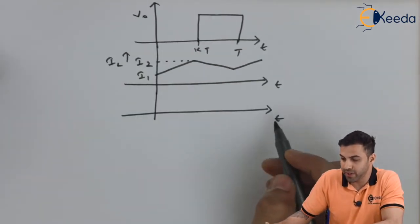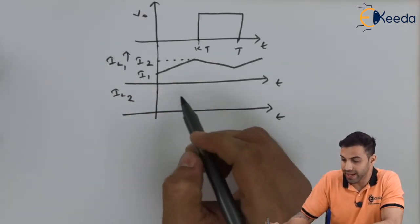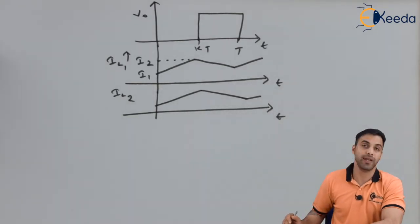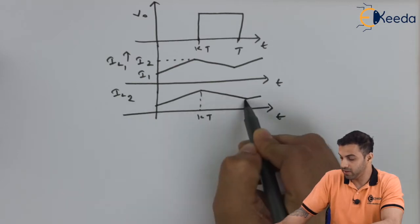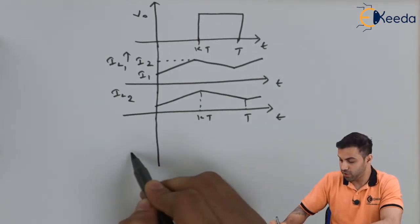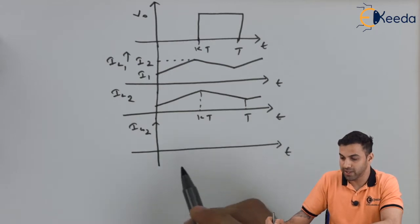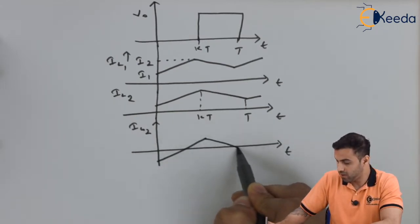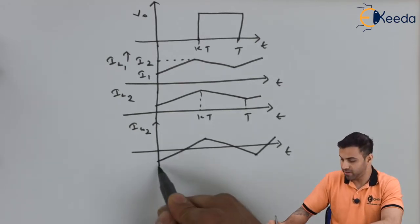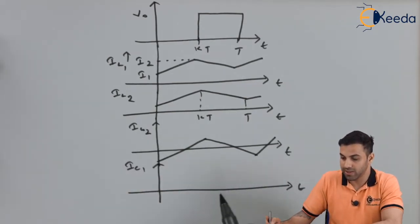Drawing IL2 versus time gives a similar waveform — one inductor charging while the other discharges — with period kT to T, running in parallel to the first inductor. For IC2 versus time, the waveform goes from negative peak to positive peak and back. IC1 versus time follows the same pattern, and this process continues repeatedly.